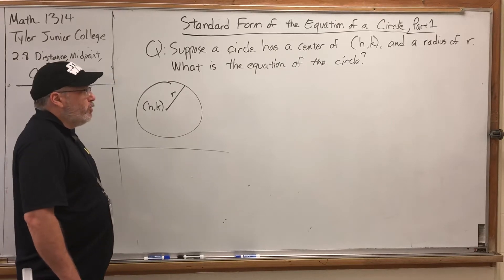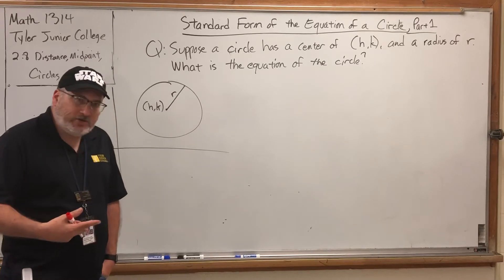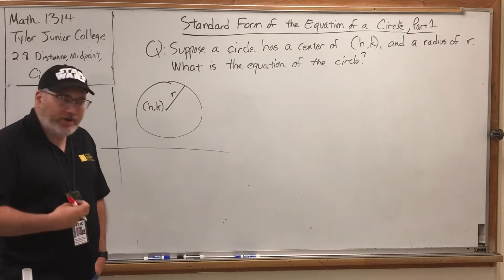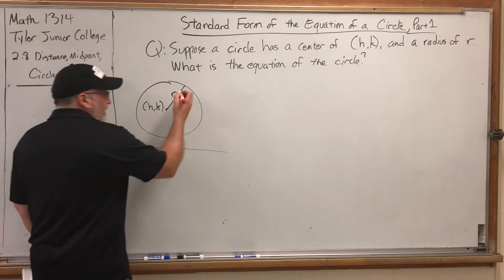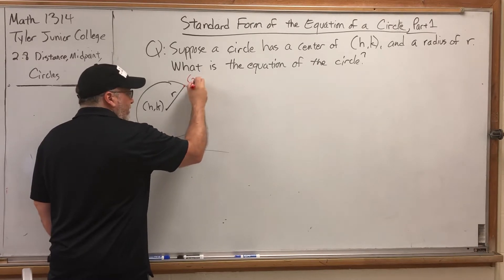In order to come up with the equation of anything, you have to set up a generic point on the shape and ask, what must be true of this point? For example, let's say we pick a point on the other end of this radius and generically call it x, y.